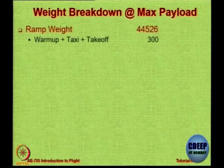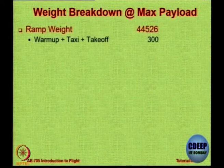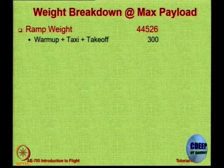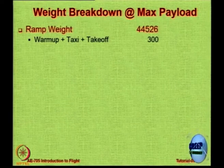Let us look at the weight breakdown. We are assuming that the airline wants to fly with maximum possible payload. There is something called ramp weight: it is the maximum takeoff weight plus the fuel required for taxiing, warm-up, and takeoff. If you want to be precise, maximum takeoff weight is the maximum permitted weight when the aircraft leaves the ground or clears the obstacle height. All the fuel burned before that, when added to max takeoff weight, gives ramp weight — the maximum weight the aircraft actually has.